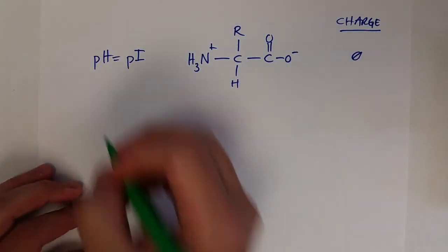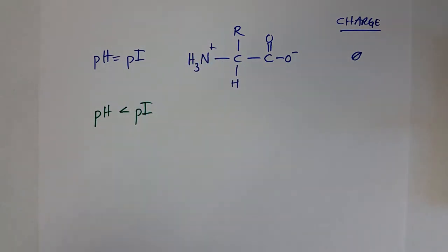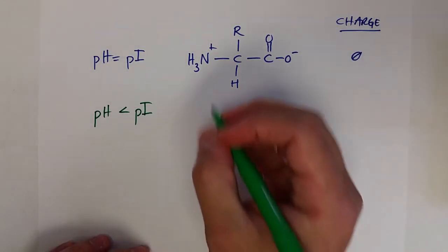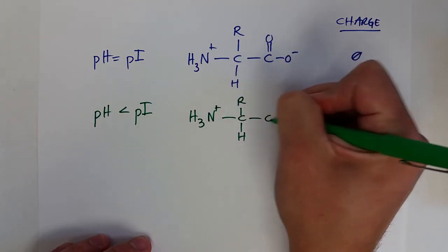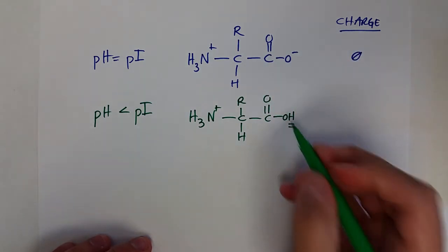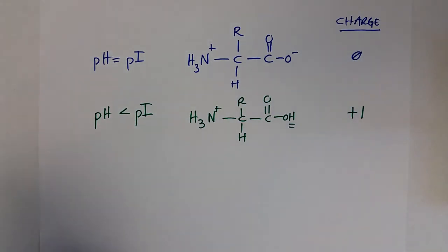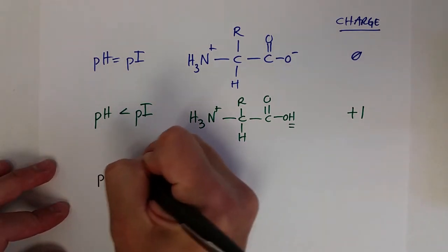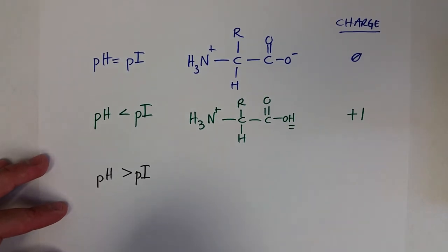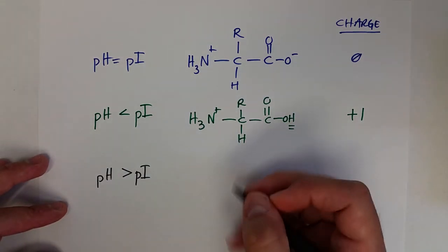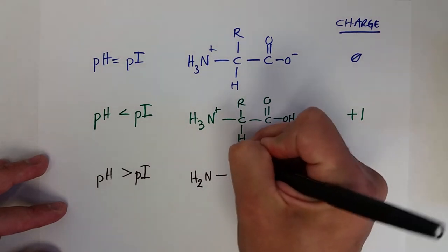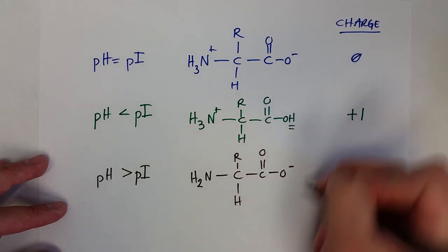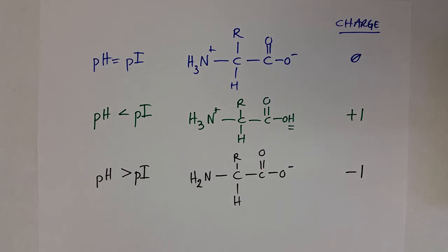If the pH is less than the isoelectric point, there are excess protons in solution and the carboxylic acid will be protonated as well, giving the amino acid an overall positive charge — the carboxylic acid gets its proton back, is no longer negatively charged, and so the amino acid carries a net +1 charge from the amine. If the pH is greater than the isoelectric point, there is a decrease in H+ ions, so the amine group will not accept protons and returns to its neutral NH2 form, while the carboxylic acid donates a proton and the amino acid becomes negatively charged.